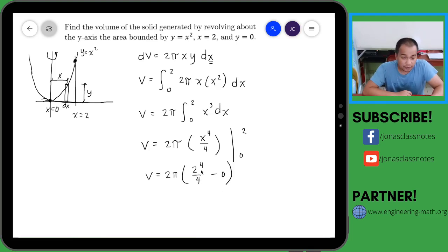2 raised to 4 over 4 is 16 divided by 4 is 4 times 2 is 8. Therefore the volume is 8π, and ito na yung sagot natin for this problem.